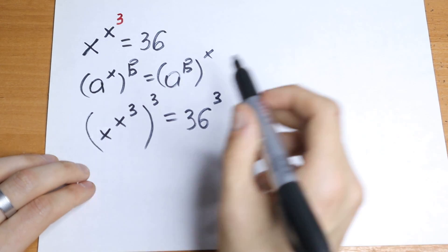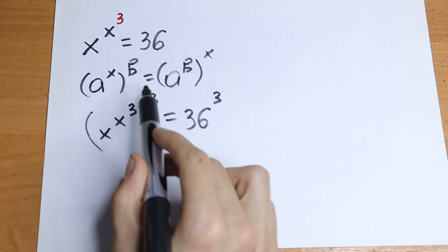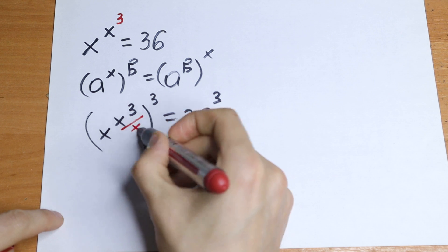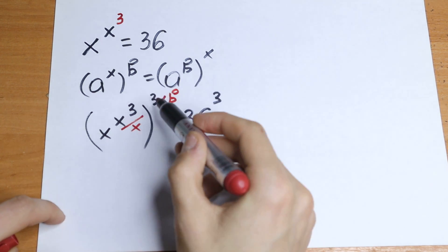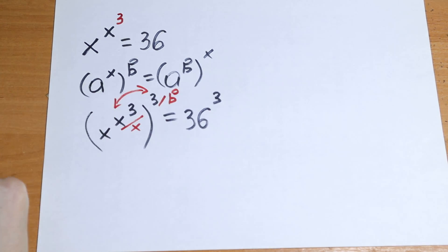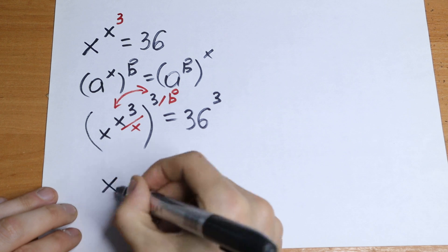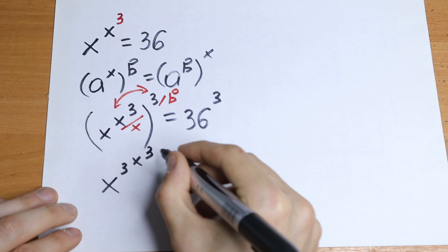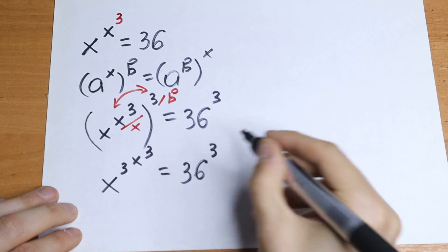What we're going to do next? This is our a and this is our b — in our case this is x and this is b. For sure we can swap these exponents, these powers. So we will have as a result x raised to the power x to the third power equal to 36 to the third power.